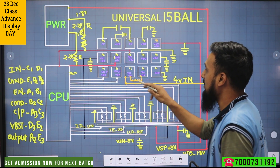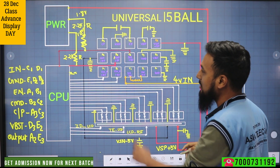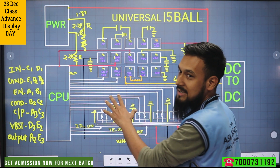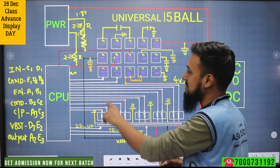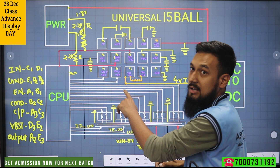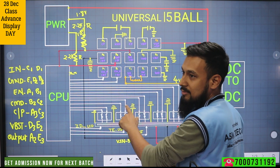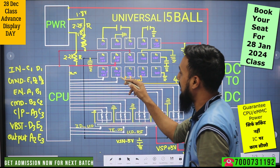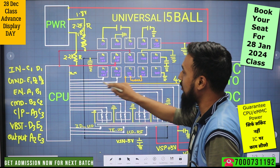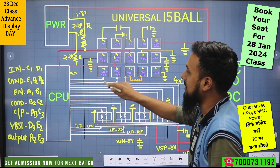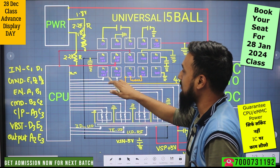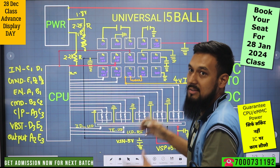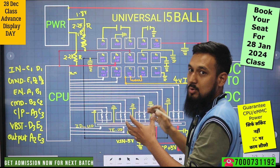After that we want the signal from the CPU, which is the enable signal, which is of 1.8V. And the enable signal — what it will do is it will give command to the IC about when it has to do the work.